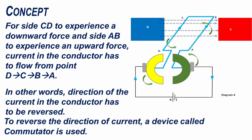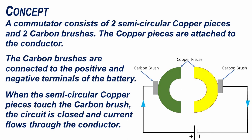To reverse the direction of current, a device called commutator is used. A commutator consists of two semi-circular copper pieces and two carbon brushes. The copper pieces are attached to the conductor. The carbon brushes are connected to the positive and negative terminals of the battery. When the semi-circular copper pieces touch the carbon brush, the circuit is closed and current flows through the conductor.